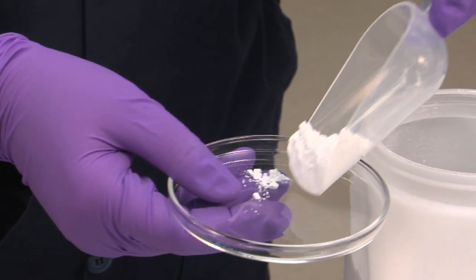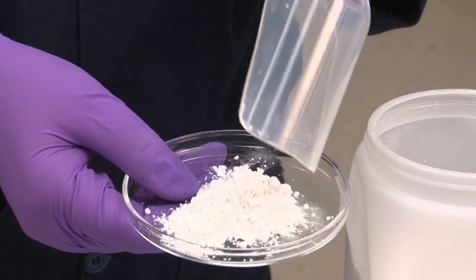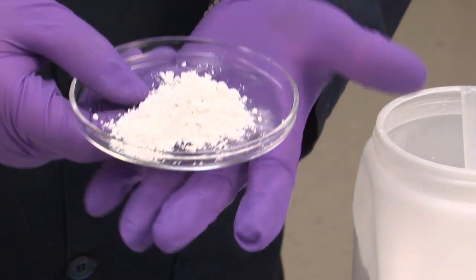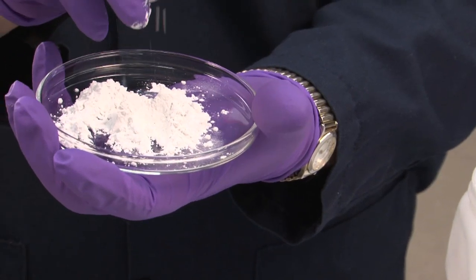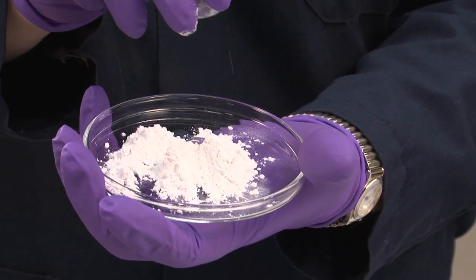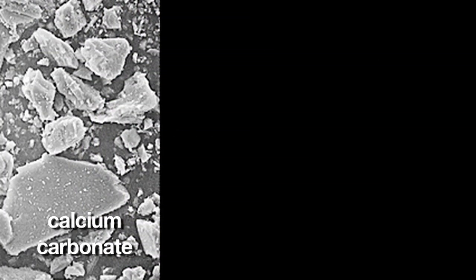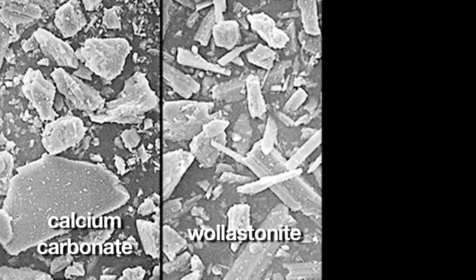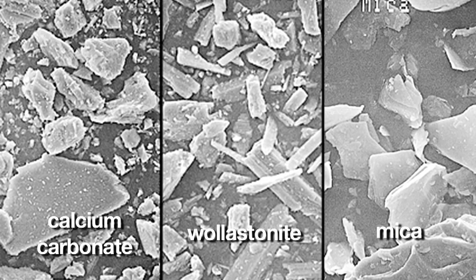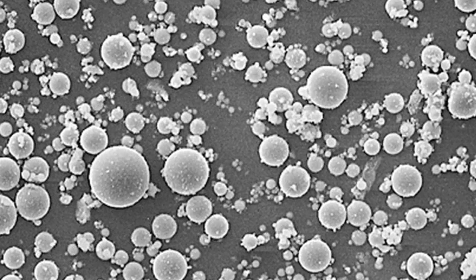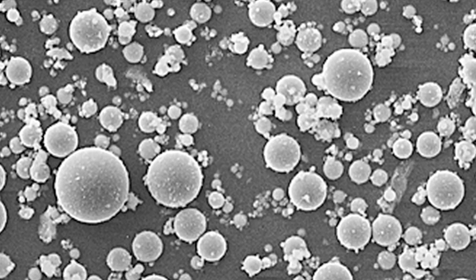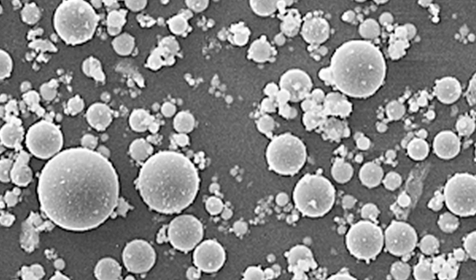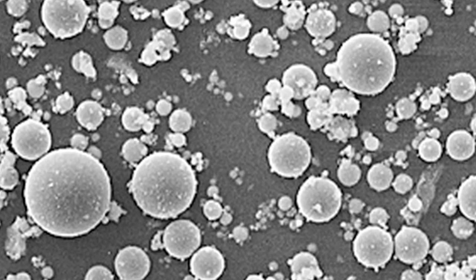Particle fineness affects a paint's color strength and uniformity, gloss, and hiding. The presence of large particles or agglomerates can result in blotchy color. Some extenders like calcium carbonate, wollastonite, or mica have uneven jagged particles. 3M brand ceramic microspheres pack tightly and evenly space pigments to improve color acceptance and give a smooth, even finish.